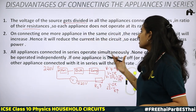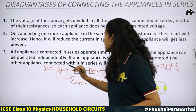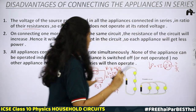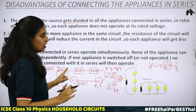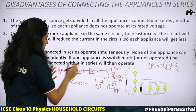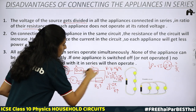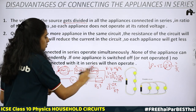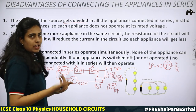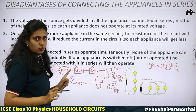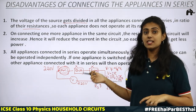If one appliance is switched off or stops working in a series connection, all other appliances will also stop working. If the fan stops, it blocks current flow, and none of the other devices will work. This is why devices are not connected in series — the interruption of one device affects all others. These are the reasons why appliances are always connected in parallel.